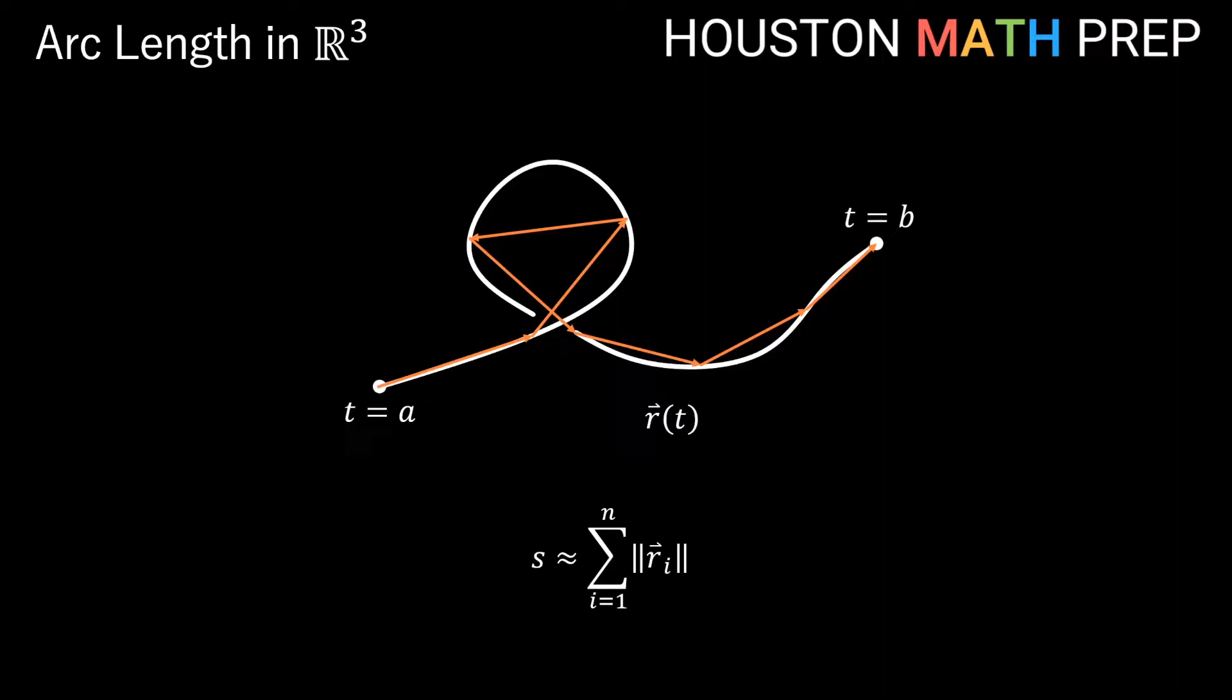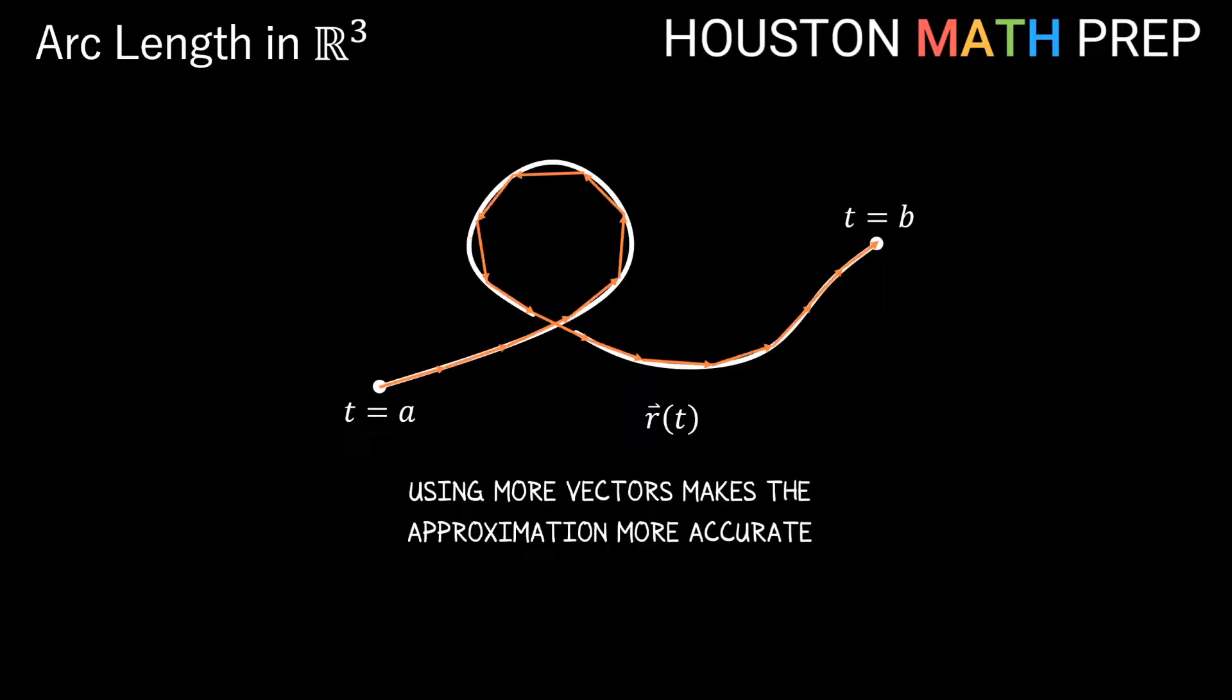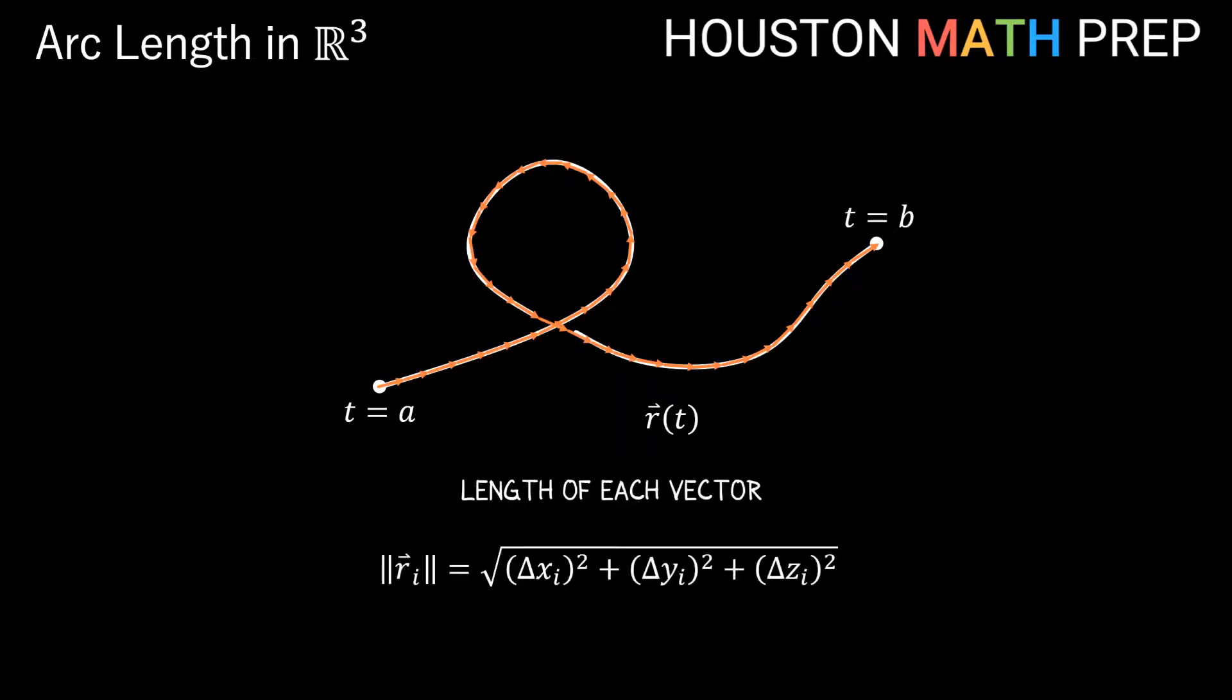So we have a pretty mediocre approximation, and it took a lot of work finding all these magnitudes of vectors and adding them all up, so we can do better, of course. Obviously we could do better by using more vectors, and that will give us a better estimate, but at the cost of having that much more work to do since we have more and more vectors. We'd have to find the magnitudes of each one using the magnitude formula that we know, and then add them all up. So some of you already know where we're going with this, I think.